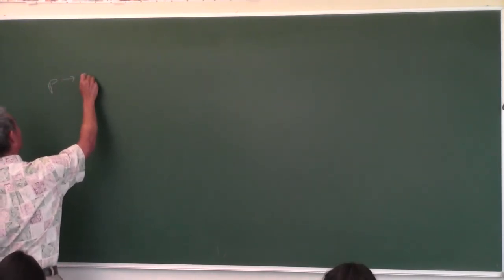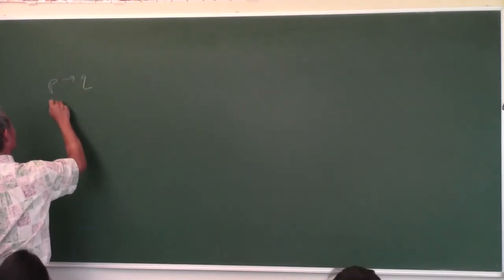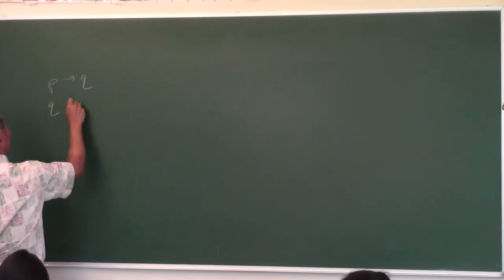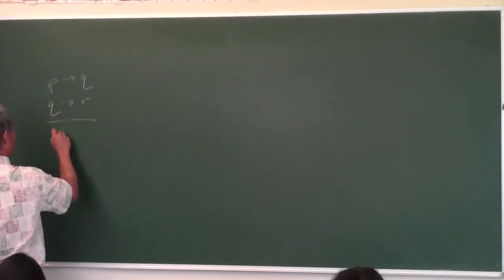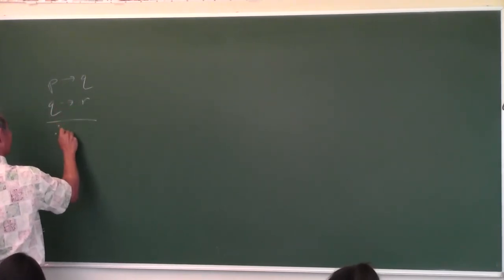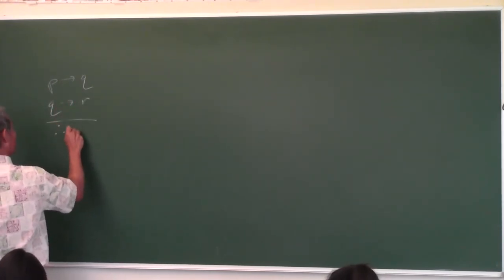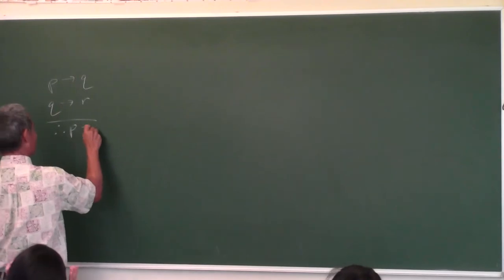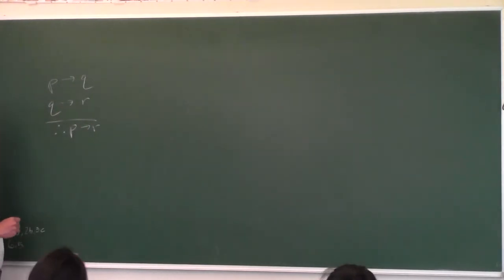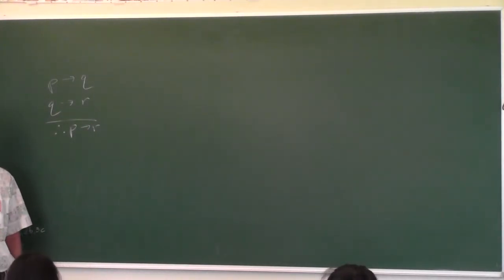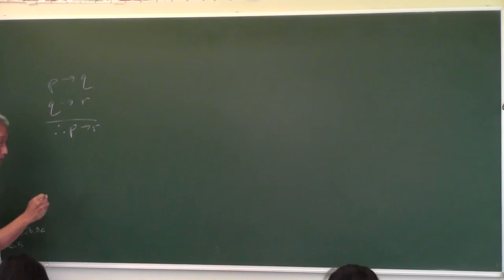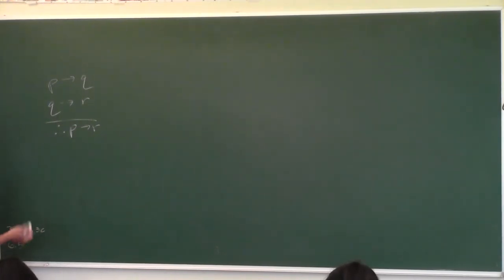Here is the law of syllogism: P implies Q, Q implies R, therefore P implies R. Now, should I start making truth tables? No. This is an indirect proof. Like the other two ways you make a truth table, but this — you're not making a truth table.